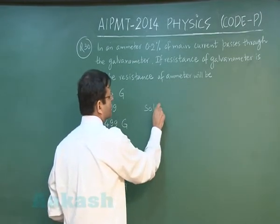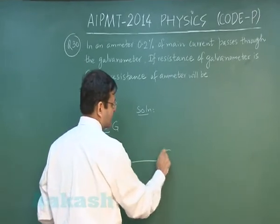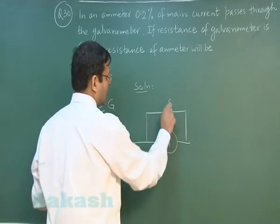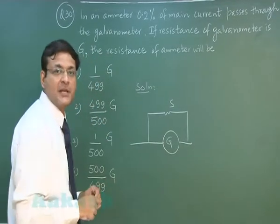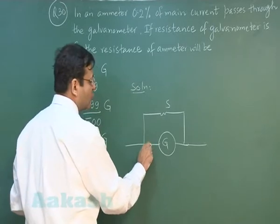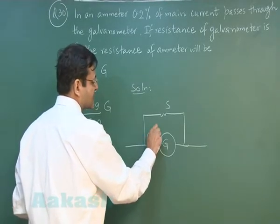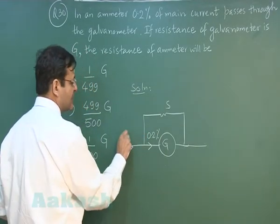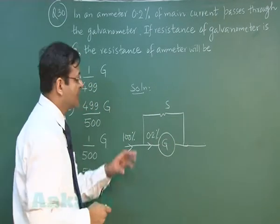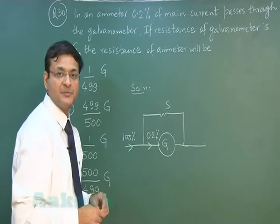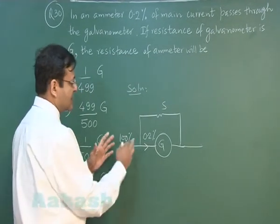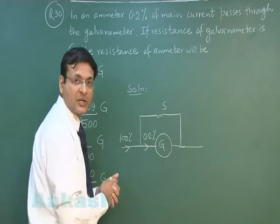If you look at the solution to this question, galvanometer is there, there must have been a shunt, and the overall thing has become an ammeter. Now see, it is saying that 0.2 percent of the current is passing here. If 100 percent current is coming here - this entire thing is ammeter - then only 0.2 percent current is passing at this place. That means the rest of the current is passing through this particular shunt.